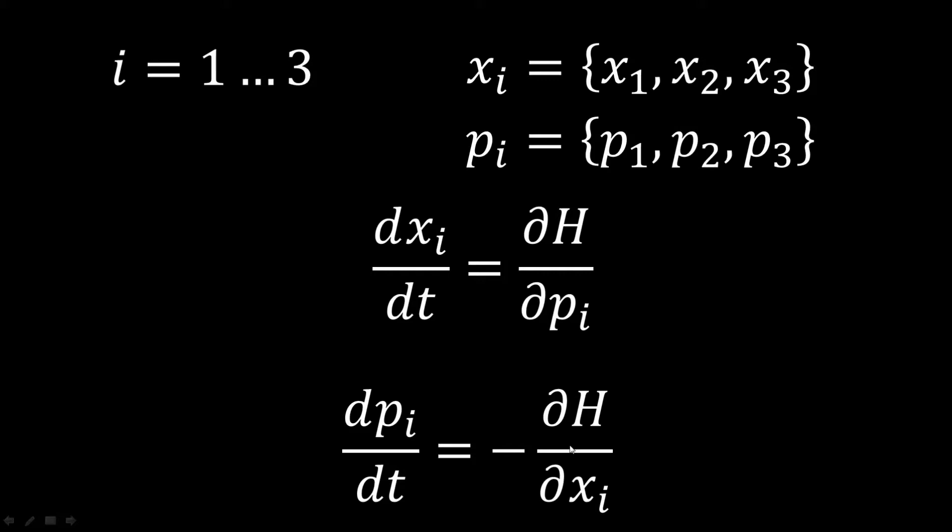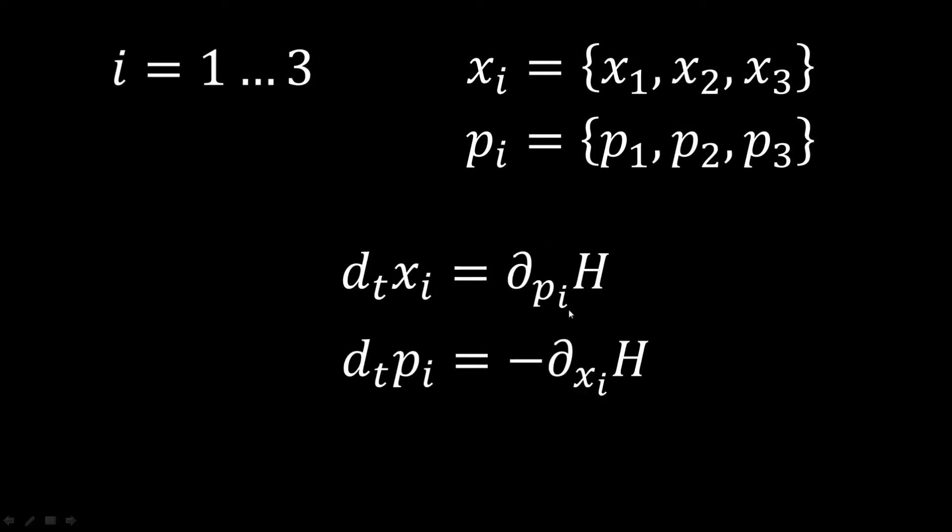Another thing we are going to do, instead of writing d dt and del del p like this, we are going to write it in a more compact form. So this dt means the derivative in time. This del p is the derivative in pi. And this del xi is the derivative in xi. So these are still the same equations that we had before, just written in a little bit more of a compact form.